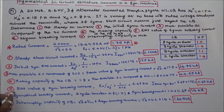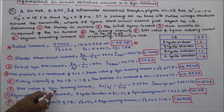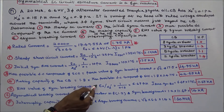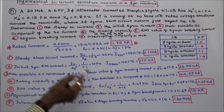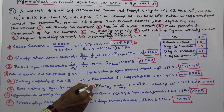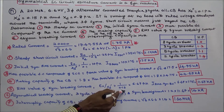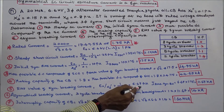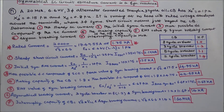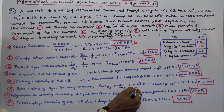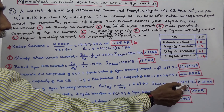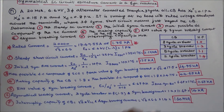Fifth is the RMS value of symmetrical breaking current. That equals E0 divided by transient reactance. Transient reactance is 0.15, E0 is 1, so 1 divided by 0.15 equals 6.67 per unit. Actual RMS value of symmetrical breaking current is 6.67 into 1.75, which equals 11.67 kA.